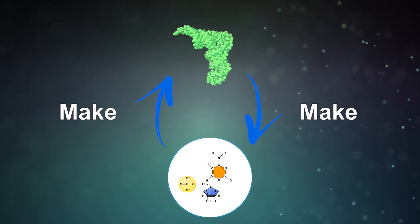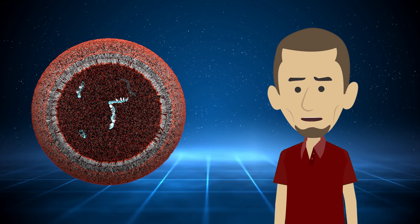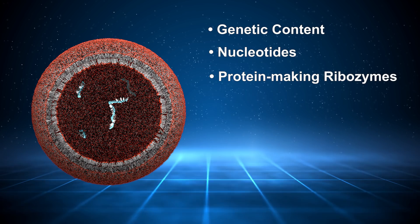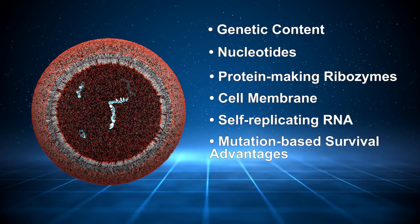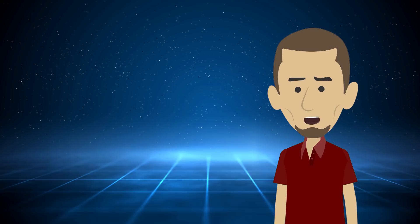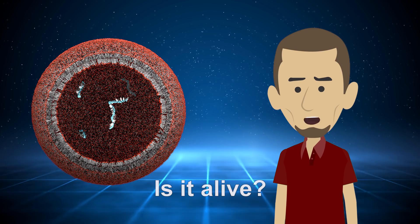So we now have a simple little protocell with genetic content, nucleotides, protein-making ribozymes, and a cell membrane capable of copying its genetic content and responding to natural selection pressures. There are a lot more steps and over 3.5 billion years to get from here to modern cells. But this simple protocell is already starting to blur the boundary between life and non-life. And each step occurred automatically in simulations of early Earth-like environments.